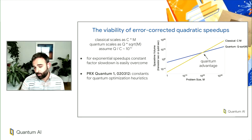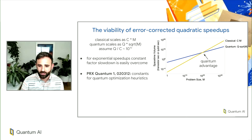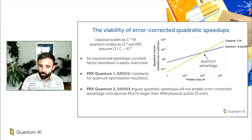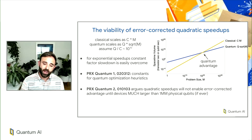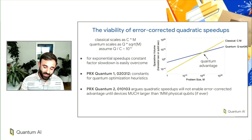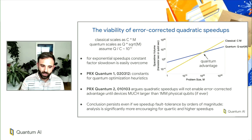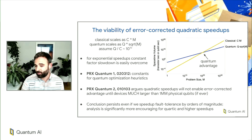If you find that cartoon too hand-wavy, I'd refer you to a paper we published in PRX Quantum last year about compiling heuristic algorithms for combinatorial optimization to the surface code, working out what some of those constant factors are. More recently, we put out another PRX Quantum paper — a perspective piece making a more complete version of this argument — essentially against the notion that quadratic speedups would enable quantum advantage on small error-corrected devices with a million physical qubits, and possibly never. We find this conclusion likely persists even if we were to speed up fault tolerance by orders of magnitude. On a positive note, the analysis becomes significantly more encouraging for slightly higher-order polynomial speedups like a quartic speedup.